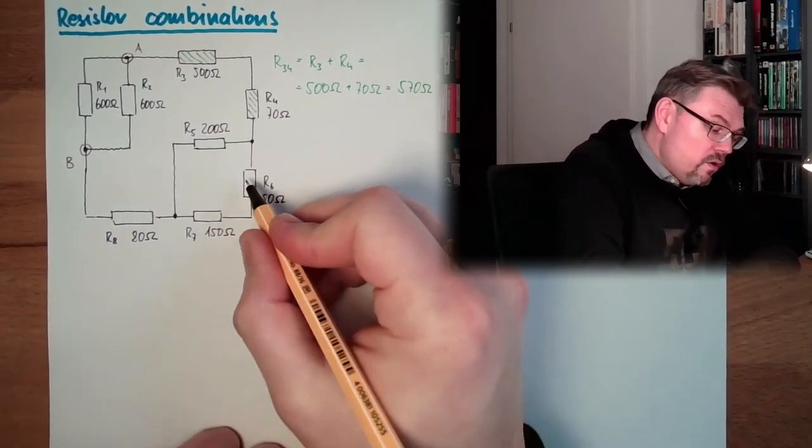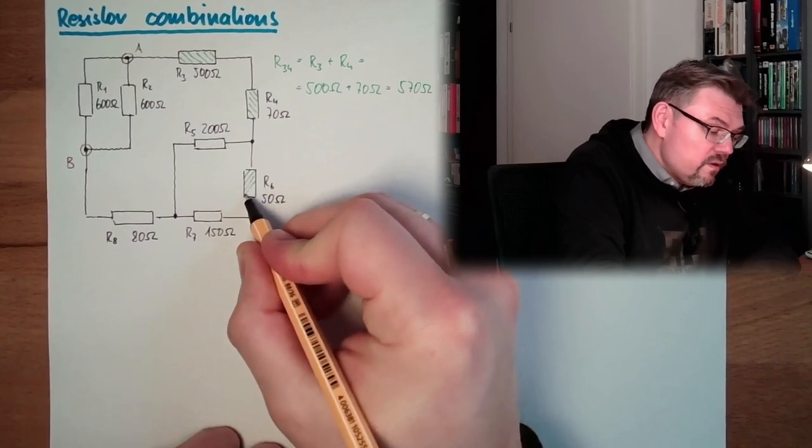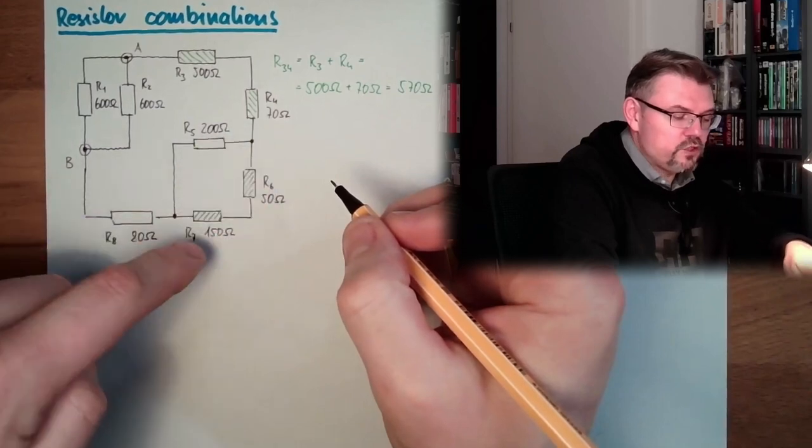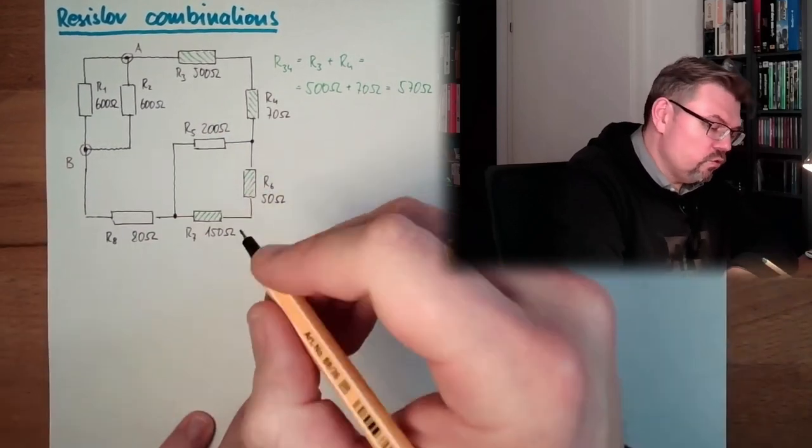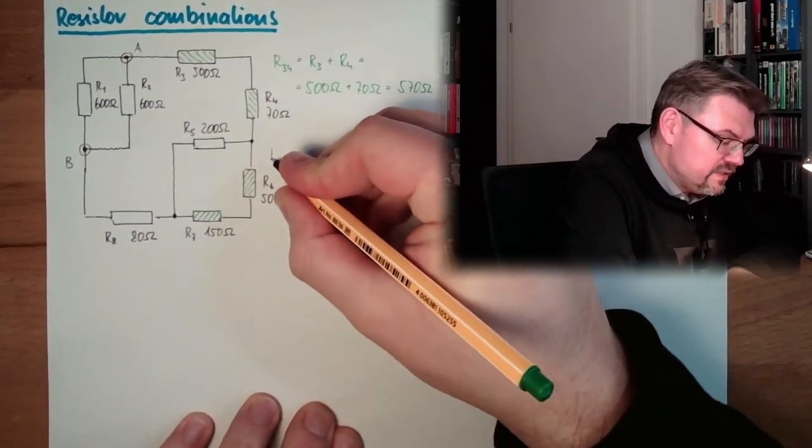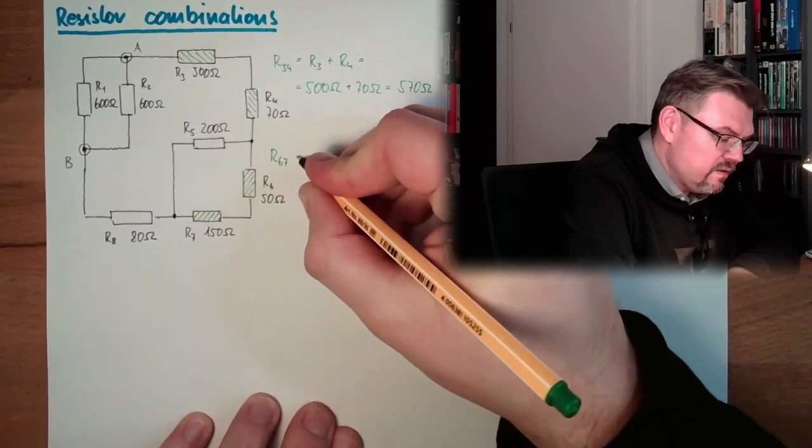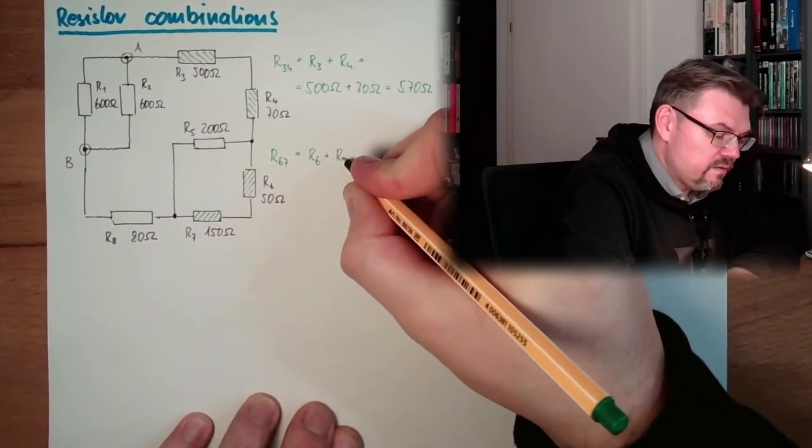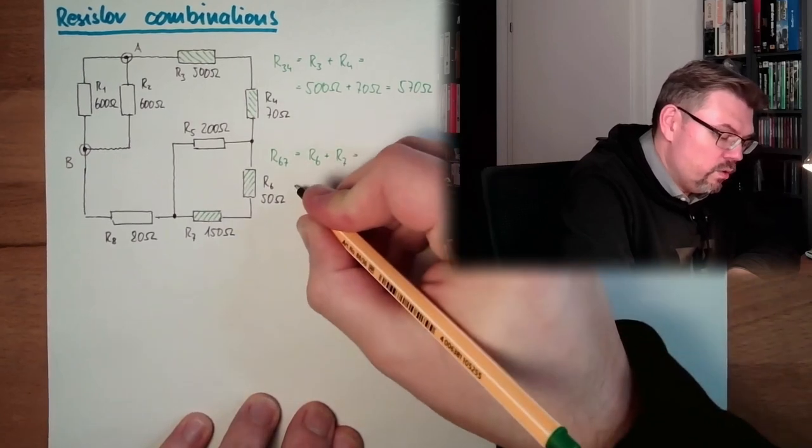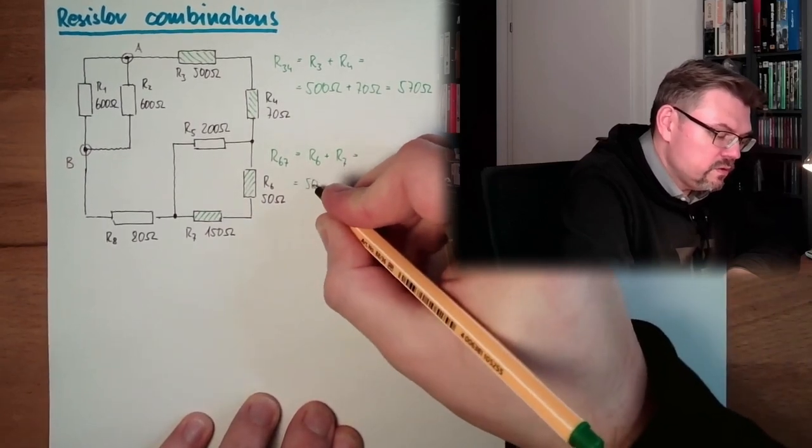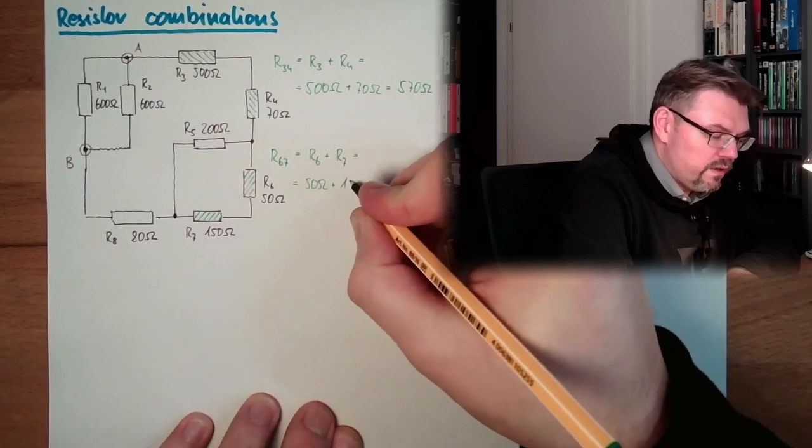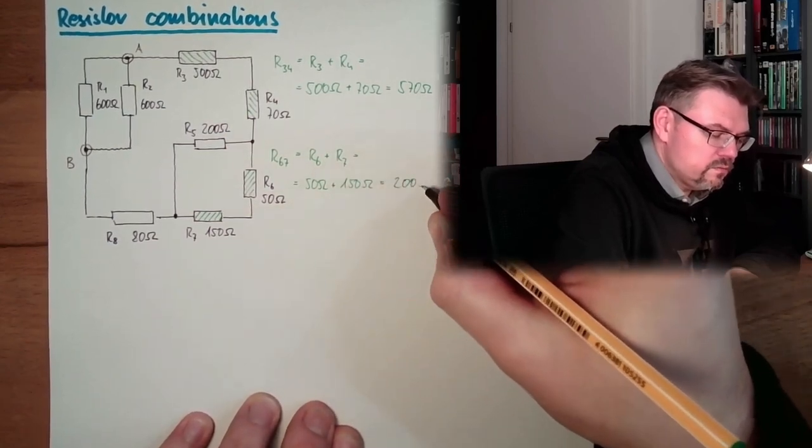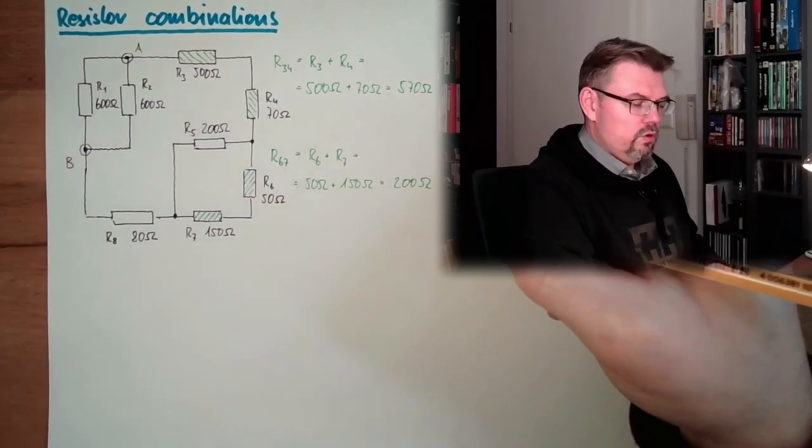Here we also have a series connection. So we can calculate here a resistance R67 is R6 plus R7 equals 50 ohms plus 150 ohms, and this is 200 ohms. Good, good.